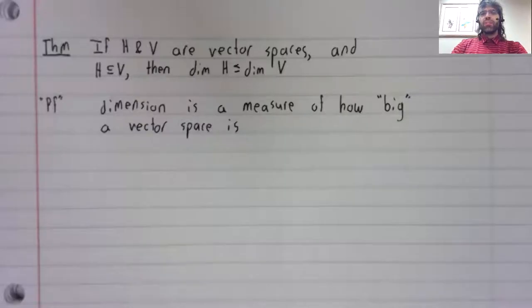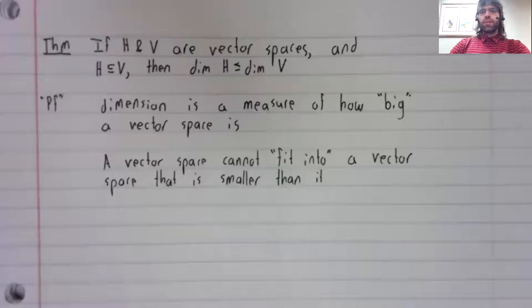Dimension is a measure of how big a vector space is. This theorem is therefore saying that if you have a large vector space and a small vector space, the large vector space cannot fit into the smaller vector space.